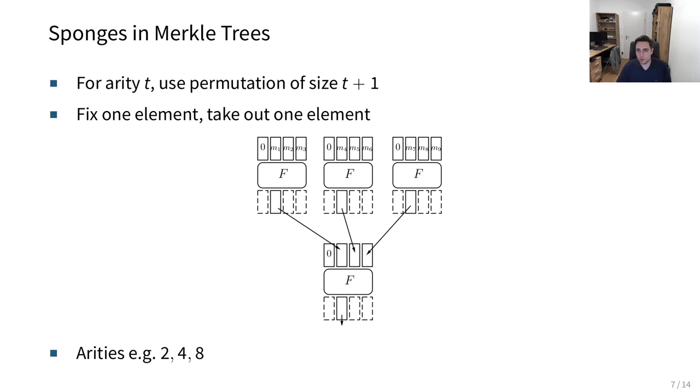In the introductory slide, I talked about Merkle trees. How can we use sponges in Merkle trees? For example, if we want to focus on an arity t, we can use a permutation of size t plus 1. Here we can fix one element and take out one element. In this example here, we have an arity of 3, so a permutation size of 3 plus 1, which is 4. Essentially it continues like that, but this is a layer here.